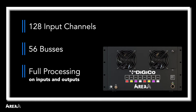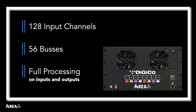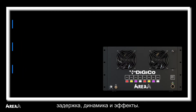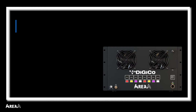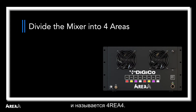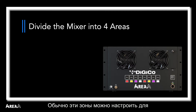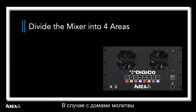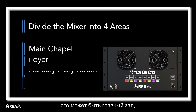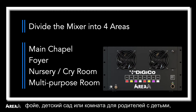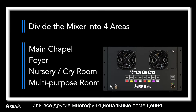All of the buses have a 4-band parametric EQ, a 28-band graphic EQ, delay, dynamics, and effects. These input channels and buses can be divided into four different areas — hence calling it the Fourier 4 — each area having its own dedicated stereo output bus. Typically, these areas would be set up as different physical rooms. In a house of worship scenario, this could be your main chapel, foyer, nursery or cry room, and maybe another multi-purpose room altogether.